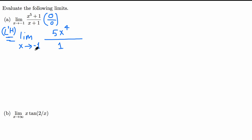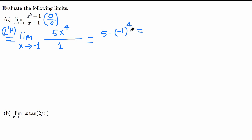Now if we plug in x = -1 here, we are not going to get 0/0 because we have 1 on the bottom. So let's plug in x = -1: 5 times (-1)⁴ divided by 1. Now (-1)⁴ is positive 1, times 5 is 5. So the answer is 5.